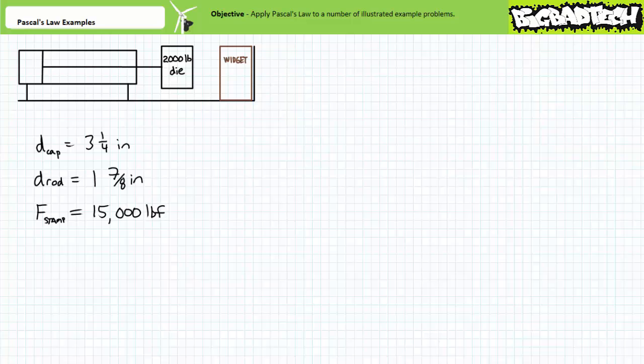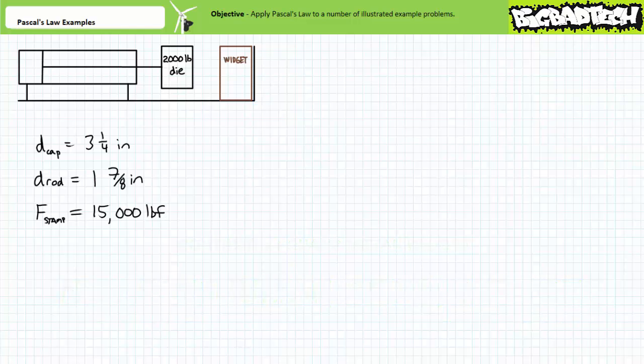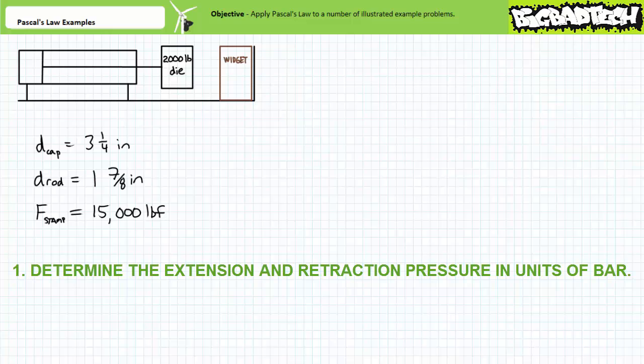Let us now consider a hydraulic cylinder used to stamp the phrase 'not for human consumption' on the side of widgets at a widget factory. This phrase is now legally mandated by a country whose populace is too stupid to realize coffee is hot, one shouldn't use the top step of a step ladder on an icy dock and that sharp metal widgets are not meant to be eaten. The die weighs 2,000 pounds and to properly stamp the phrase on the side of the widget necessitates the exertion of 15,000 pounds of force. The cylinder has a cap diameter of three and a quarter inches and a rod diameter of one and seven eighths of an inch. Use these figures in the accompanying diagram to determine the pressure of extension and the pressure of retraction in units of bar.